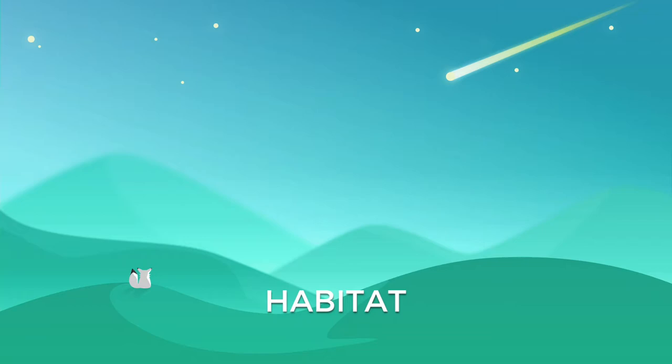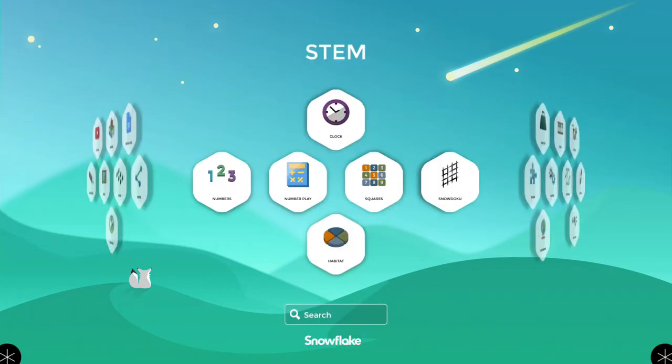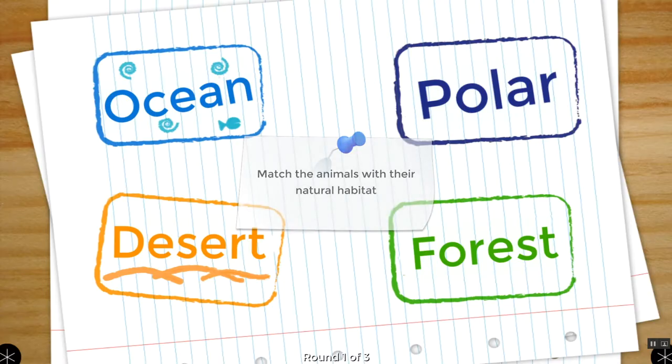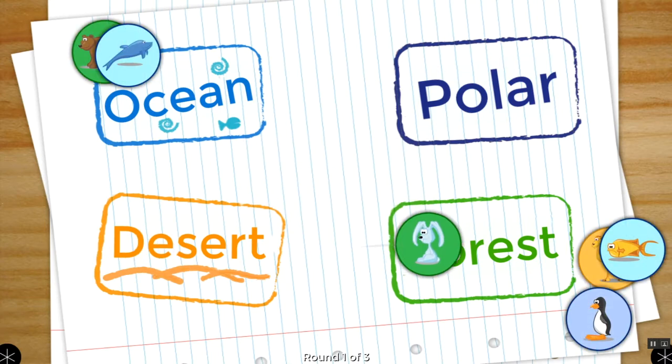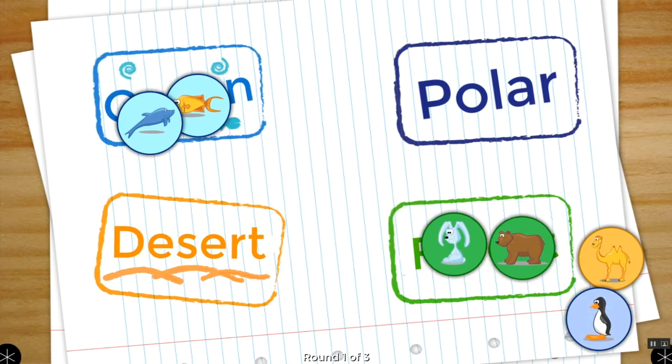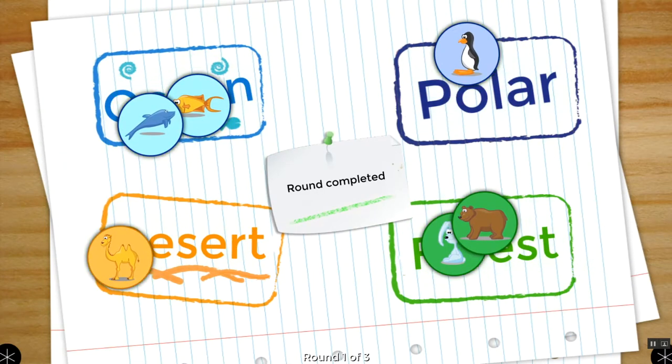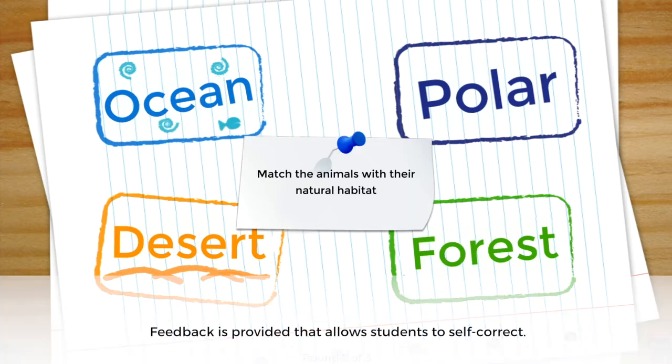The Habitat app is good for young children who are learning about animals and their habitats. Select the Habitat icon, which will lead to a screen with four categories of habitats, and brief instructions. Picture cards of various animals appear on the screen, and students drag them to the correct locations.